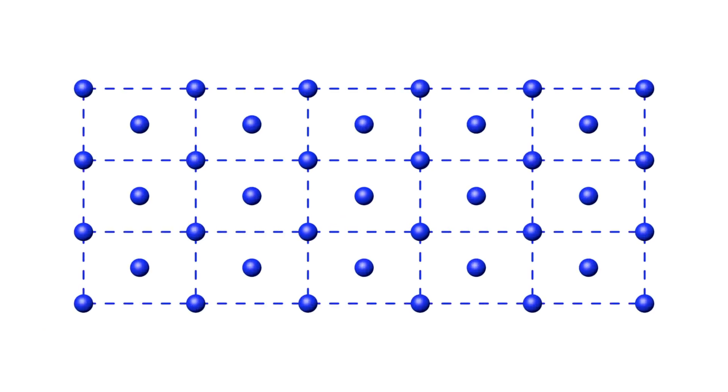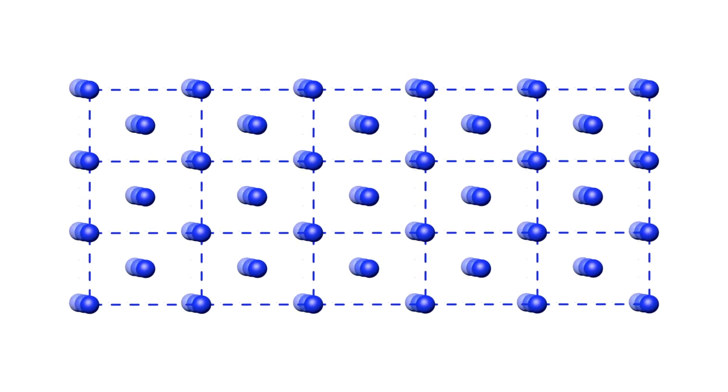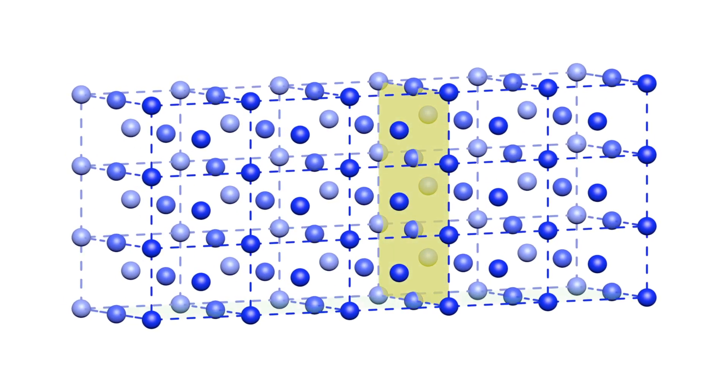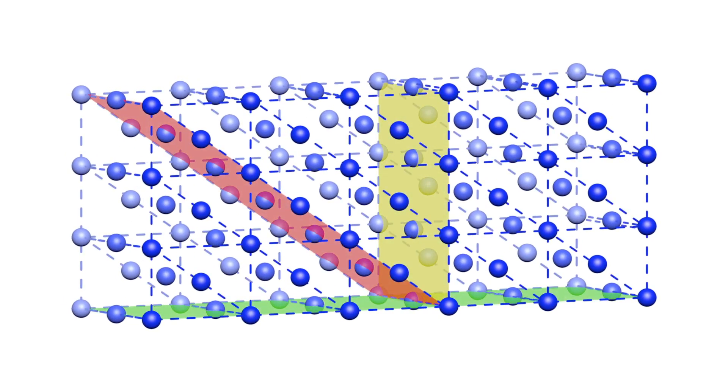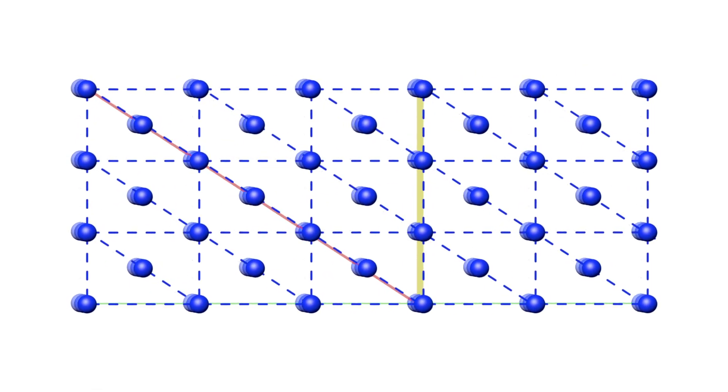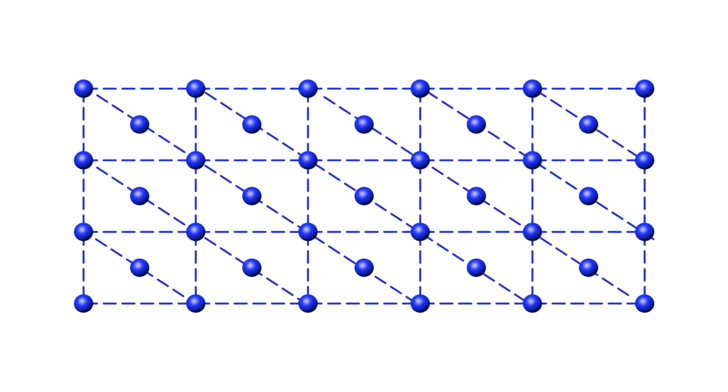When this nanometer-sized unit is repeated over and over again, it becomes a grid exhibiting long-range order. As we explore this long-range order, we see the atomic scale components lie along perfectly spaced lines.